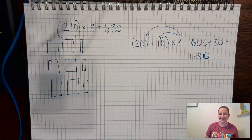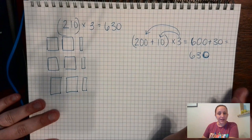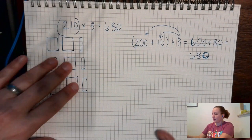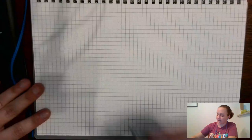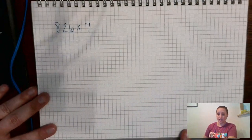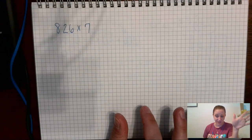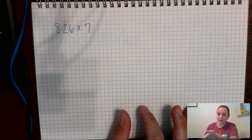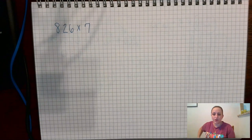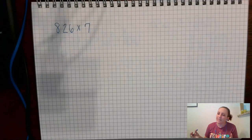Alright, so that equals 630. Now let's look at a problem that's a little bit more difficult. Let's say I have 826 times 7. I could draw out 826 in place value blocks seven times, but I'm not going to do that because that's going to take a long time and a lot of counting. When you start counting things that you have a whole bunch of times, it's really easy to miscount and make a mistake.